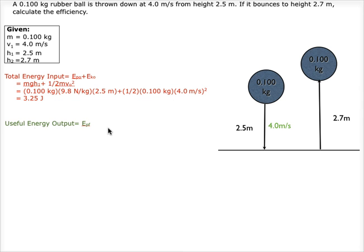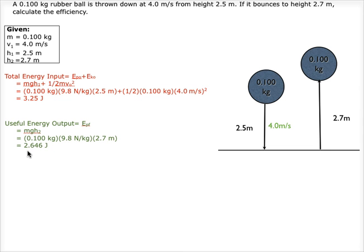We then calculate the useful energy output, which is just potential energy, as at the peak of the bounce the velocity — and thus kinetic energy — is zero. So that equals mass times force of gravity times height 2, or 0.100 kilograms times 9.8 newtons per kilogram times 2.7 meters, which equals 2.646 joules.